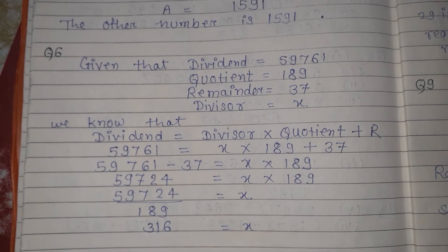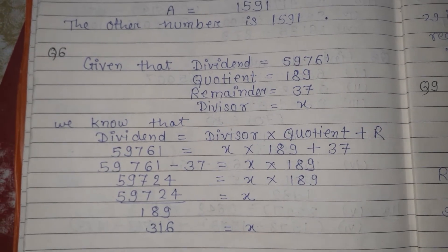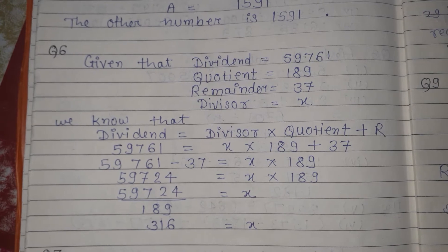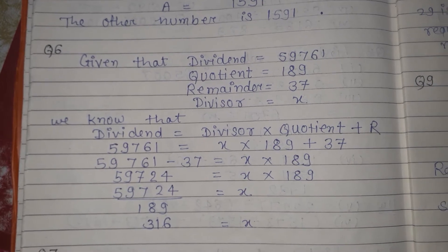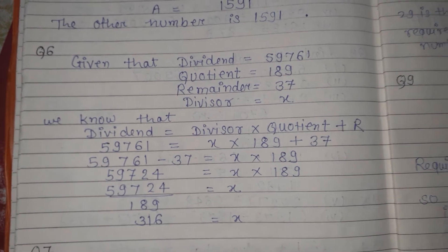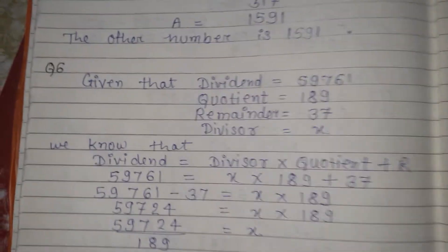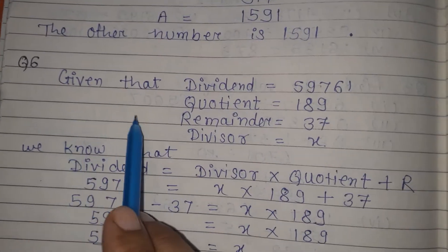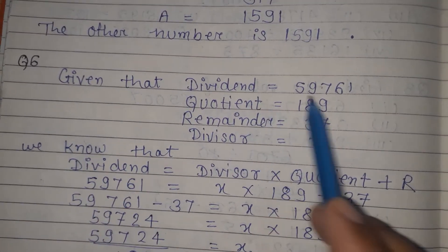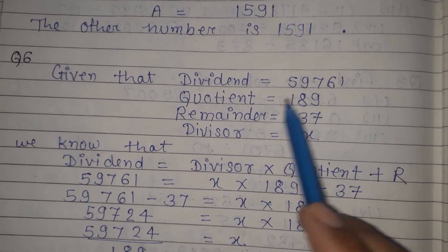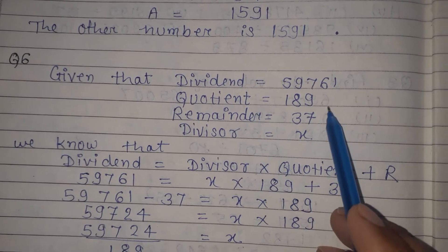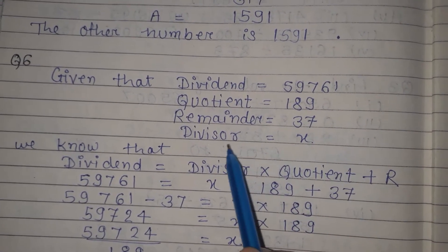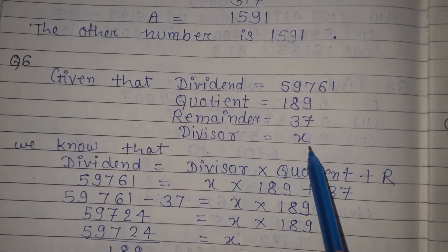Hello dear students. I am going to start class 6 mathematics R.S. Aggarwal, chapter number 3, whole numbers, exercise 3E, question number 6. In that question it is given that dividend is equal to 59761, quotient is equal to 189, remainder is equal to 37, and we have to find the divisor.